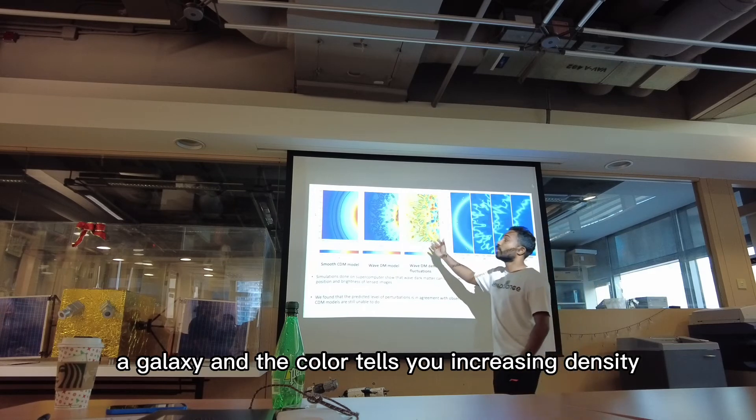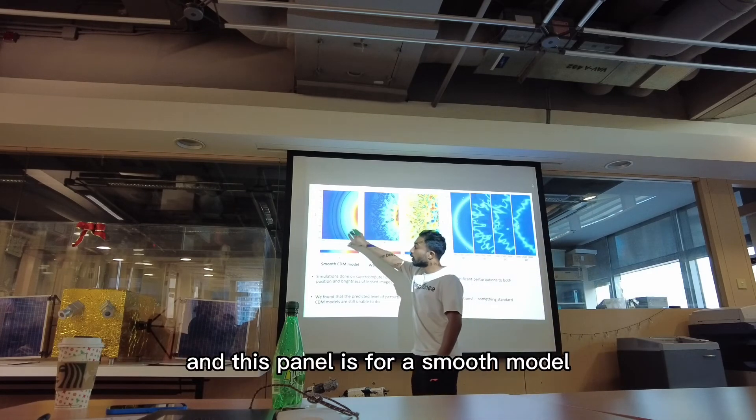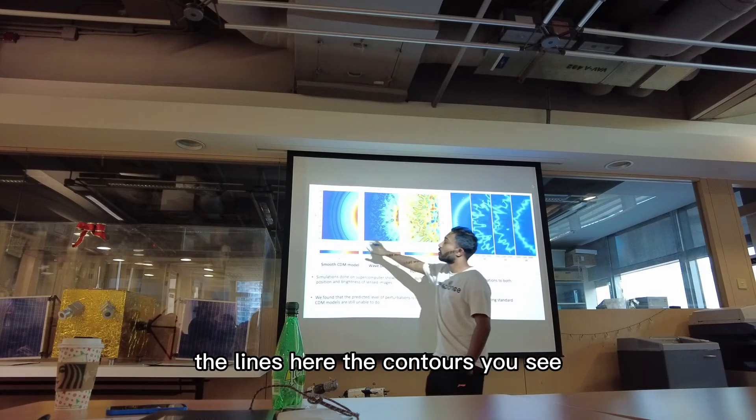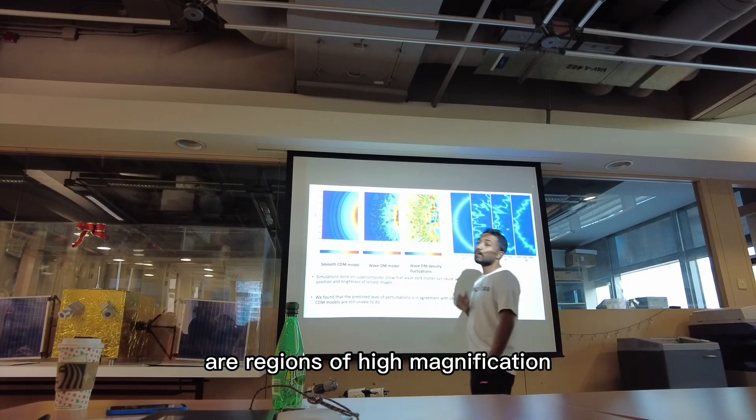And the color tells you increasing density. And this panel is for a smooth model, a standard cold dark matter model. Now the lines here, the contours you see, are regions of high magnification.